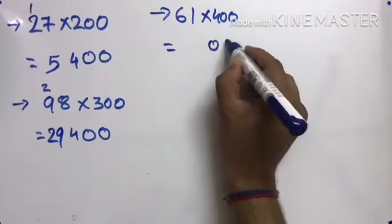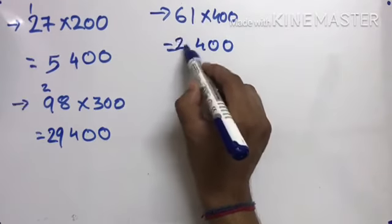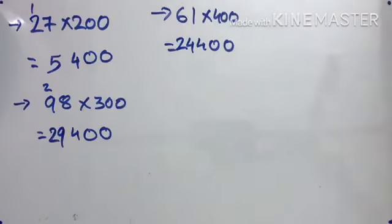61 times 400. So 400 means two zeros. 4 times 1 is 4. 4 times 6 is 24. 24,400. Understood?